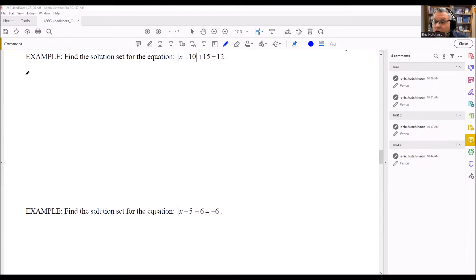So first one, this absolute value, no matter what, whenever you have absolute value, it has to be isolated on one side of the equation. So if it's not isolated, that's your first step would be to isolate it. We're going to subtract 15 from both sides. Absolute value x plus 10 is going to equal negative 3.